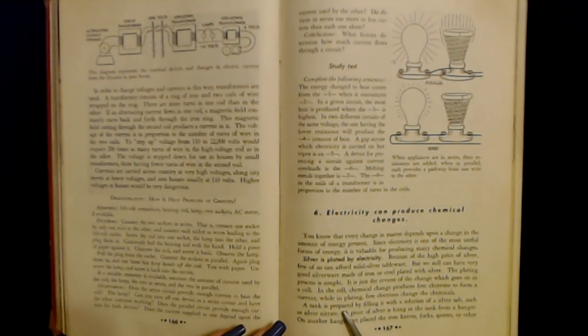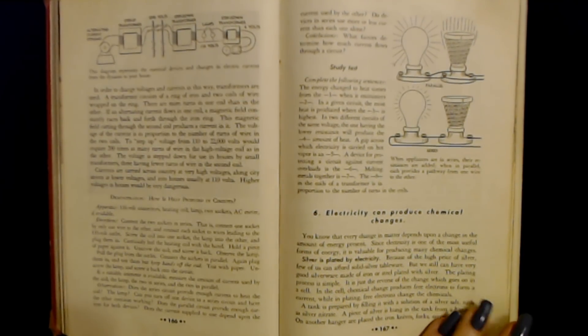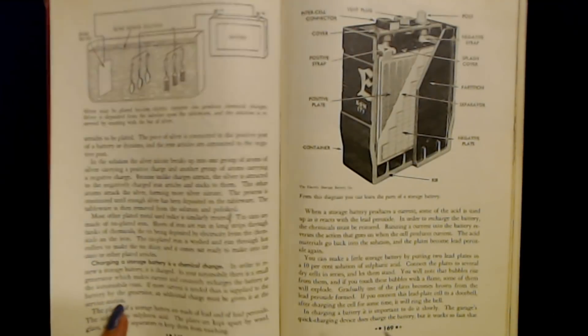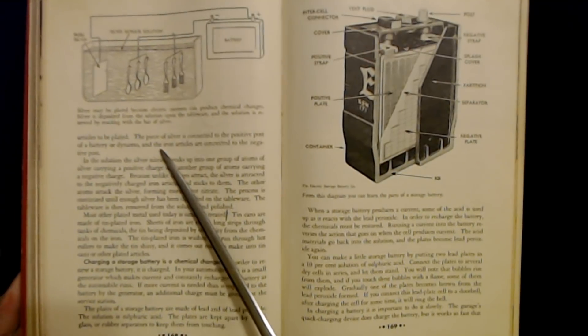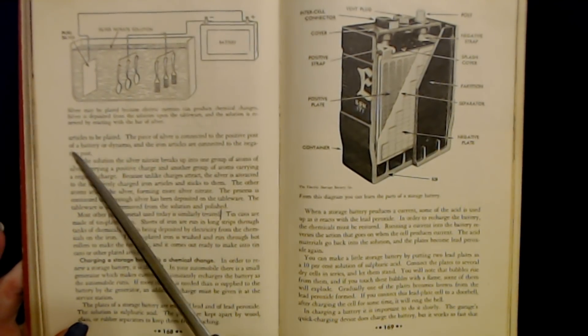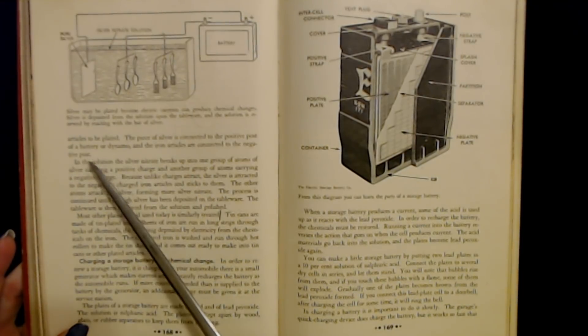A tank is prepared by filling it with a solution of a silver salt, such as silver nitrate. A piece of silver is hung in the tank from a hanger. On another hanger are placed the iron knives, forks, spoons, or other articles to be plated. The piece of silver is connected to the positive post of a battery or dynamo and the iron articles are connected to the negative post. So you can see the pieces here in the battery and you have the negative and positive posts. And here is a plate of pure silver and everything is immersed in silver nitrate solution.